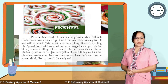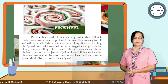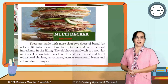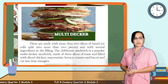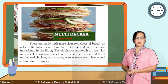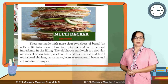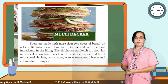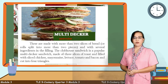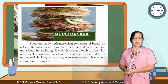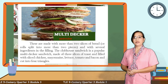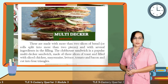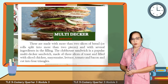Number three, pinwheel sandwiches are made of bread cut lengthwise about 3/8 inch thick. Fresh cream bread is preferable because they are easy to roll and will not crack. Trim the crust and flatten long slices with a rolling pin. Spread bread with softened butter or margarine and your choice of smooth fillings like cream cheese, cheese pimiento, peanut butter, jams, and jellies. Smooth fillings are ideal for pinwheel sandwiches because they do not have bulk and can spread thinly. Roll up bread like a jelly roll.